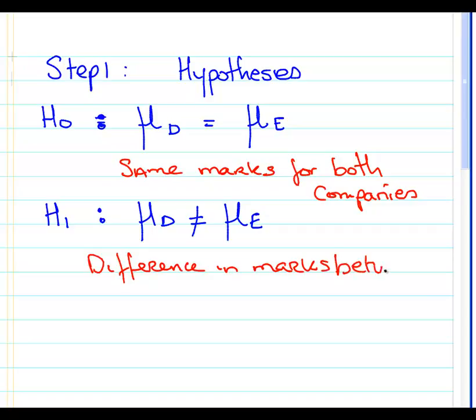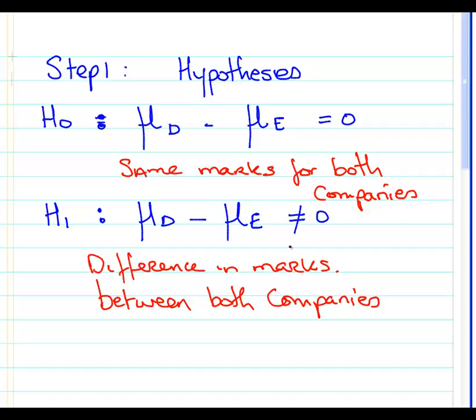So just write out something that suggests that both companies have the same sort of standard or get the same marks versus the alternative hypothesis that there is some sort of difference in quality in the teaching. Now a written description helps, and a mathematical description. Now I'm just going to slightly change the mathematical description. So rather than μD equals μE, I'm going to write it in terms of μD minus μE equal to zero. The difference is zero, and I'm going to rewrite the alternative hypothesis as saying that it is not zero.